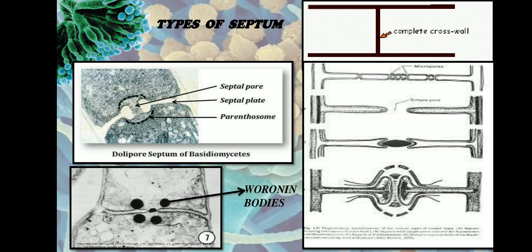The Woronin bodies bind near the septal pore, effectively closing it. This prevents the cytoplasmic contents from the infected or damaged cell from moving into the healthy cell, thereby protecting the healthy cell.